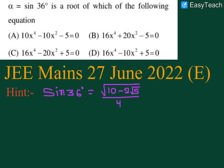Alpha is given as sin 36 degrees. The question asks: sin 36 degrees is a root of which of the following equations? Four options are given. The hint for this question is that the value of sin 36 degrees is √(10 − 2√5) / 4.